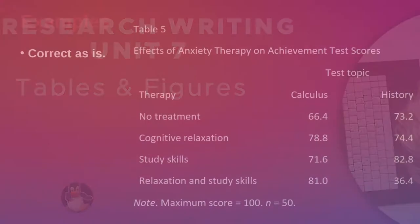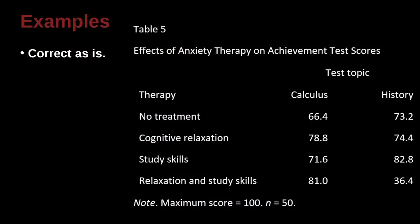Here's a nice example of getting some decking included here. So we've got our two columns, right? Calculus, history, and then of course the therapies, our stub over here, therapy, and our therapy types and calculus history.